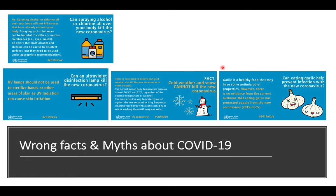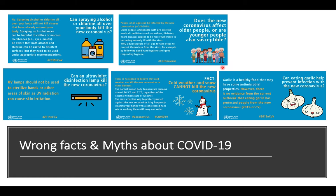People believe eating garlic can help prevent infection. Garlic is healthy and has antimicrobial properties, but there is no evidence it can prevent coronavirus. Regarding age groups: every age group is equally affected. While it is true that older people with weaker immune systems are more vulnerable, younger people can also get infected.